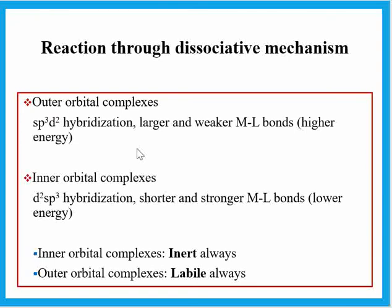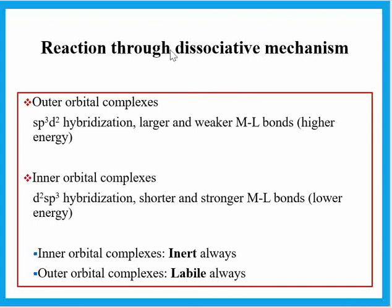Now we will classify these complexes into inert and labile as per VBT. Consider the substitution reaction, which can proceed via two mechanisms: dissociative mechanism (SN1 type) and associative mechanism (SN2 type). For an octahedral complex via dissociative mechanism, the intermediate state becomes square pyramidal. For associative mechanism, the intermediate becomes pentagonal bipyramidal geometry.